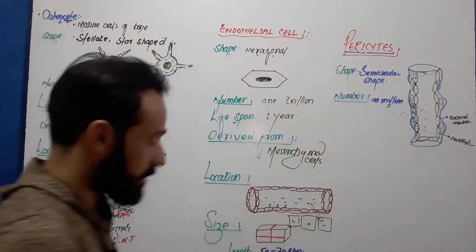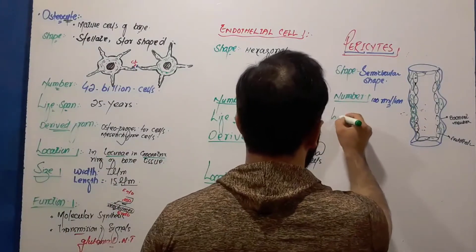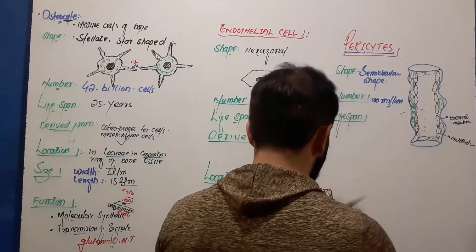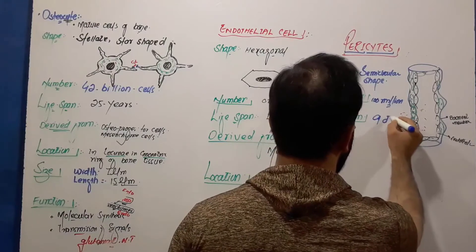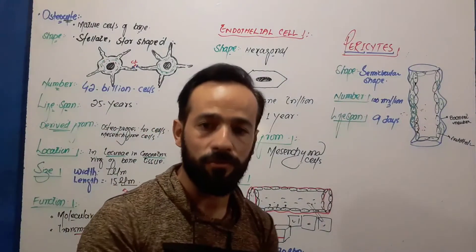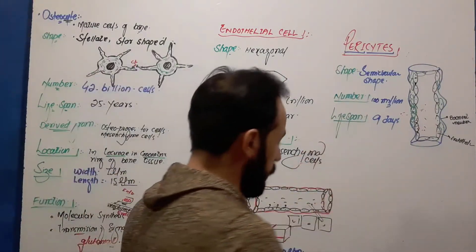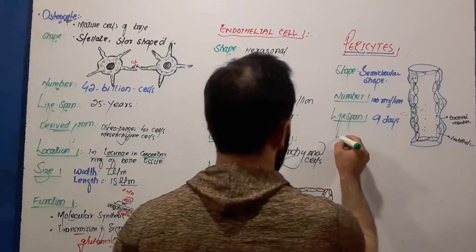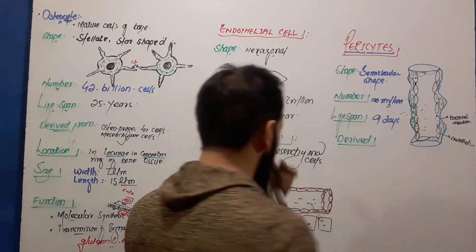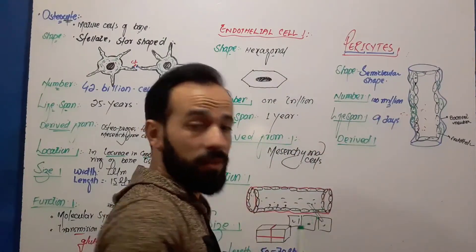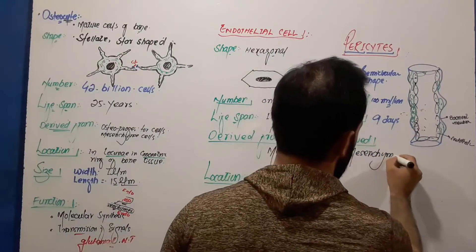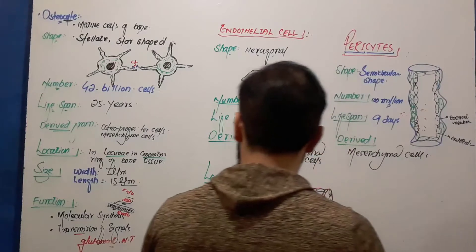What is their lifespan? The lifespan of these cells is about nine days — they remain for nine days, reproduce before dying, and then die. They are also derived from mesenchymal cells, which is why we are discussing them as cells of connective tissue.